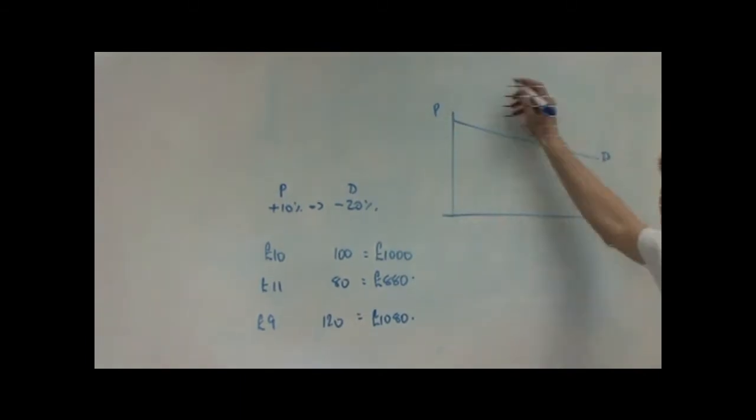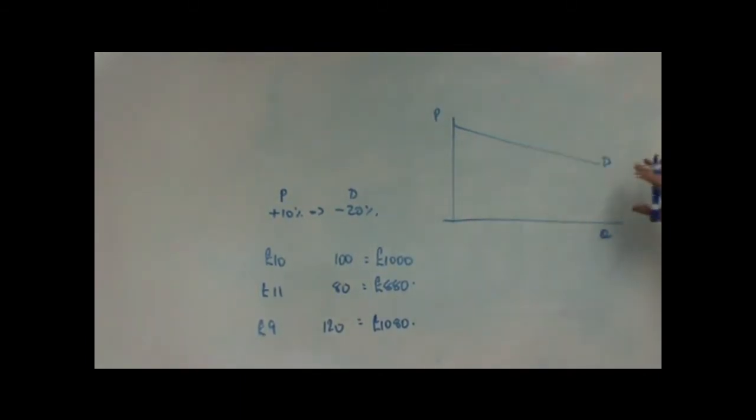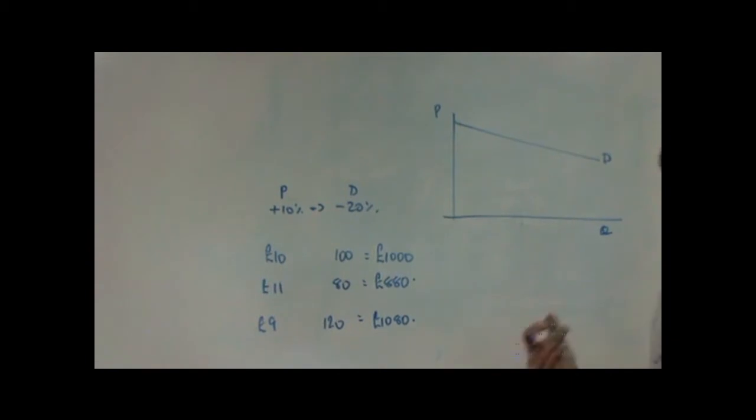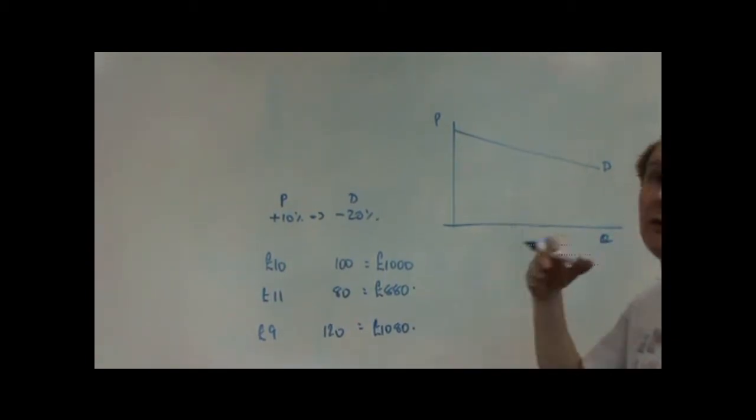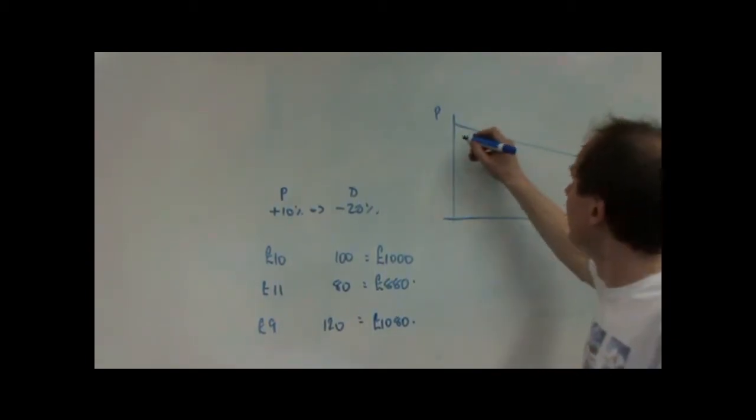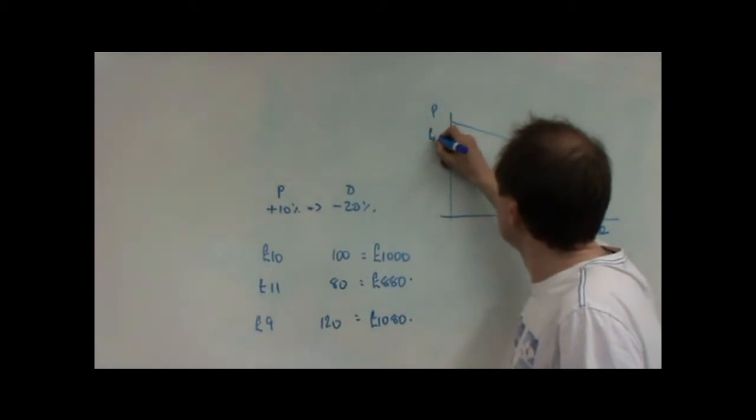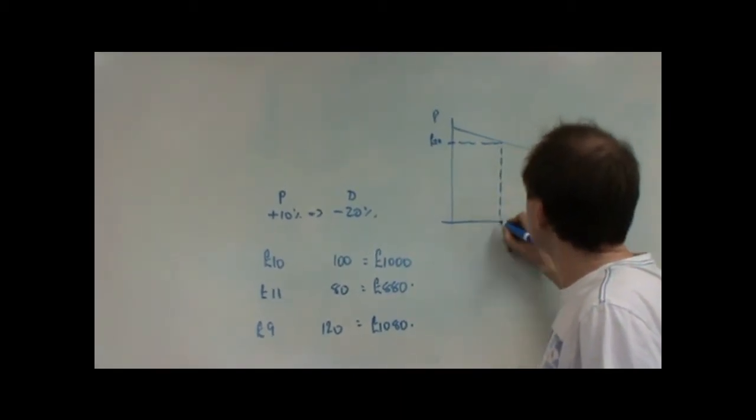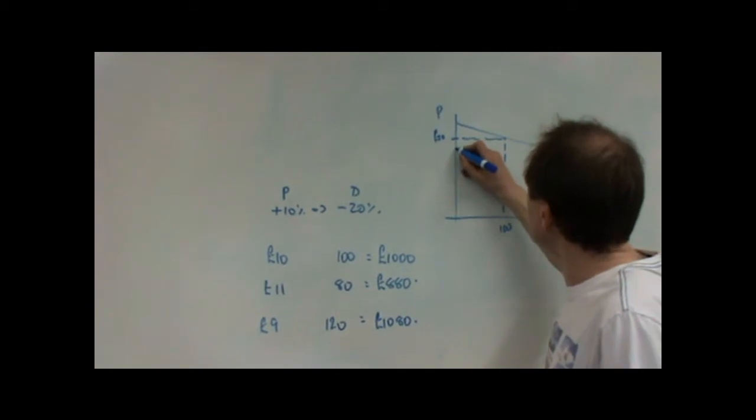So, there's a relatively elastic demand curve. We can see it's elastic because most of the demand curve is over here. So we're therefore in the top half of the demand curve, which makes it elastic. So, there's £10. There's 100 units. We cut price to £9.